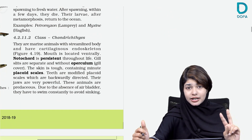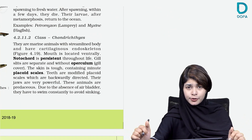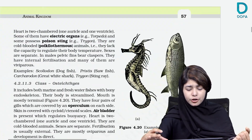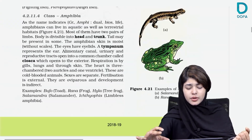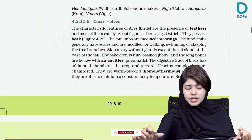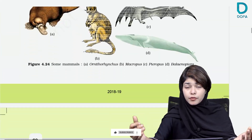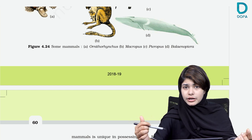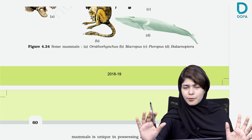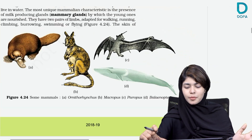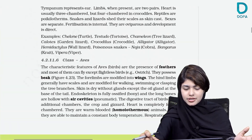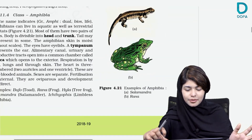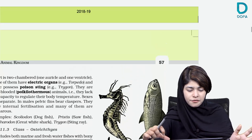We are going to study two things in this session — a little bit of amphibia, reptilia, aves, and mammalian. We are going to study a little bit of examples. If you study a little bit of this session, we are going to study the same thing. Done, perfect, yes.